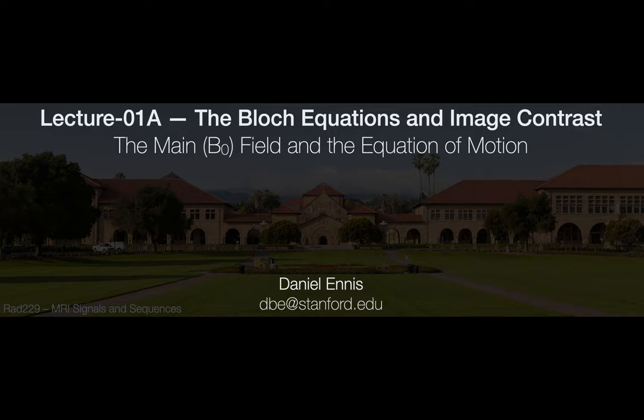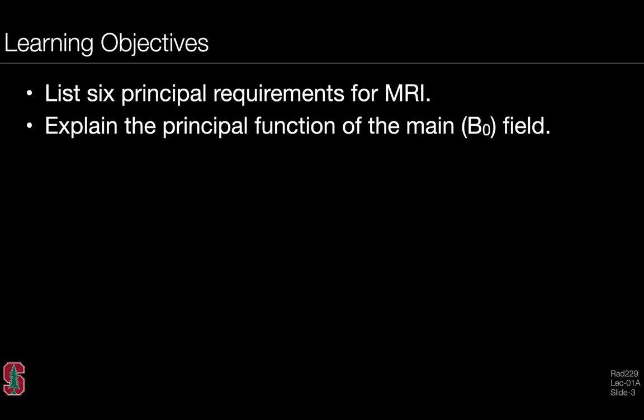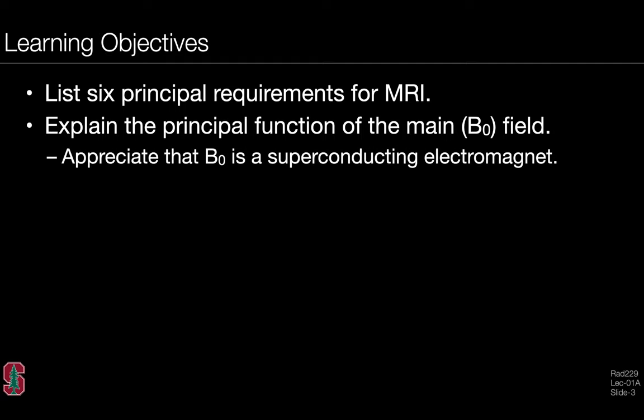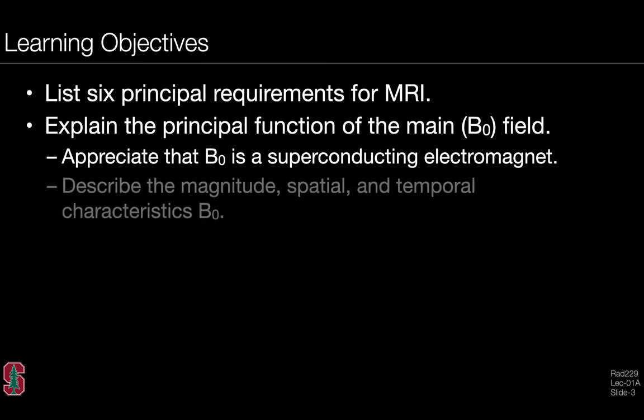Lecture 1a covers the main B0 field and the equation of motion. The learning objectives include being able to list six principal requirements for MRI, explain the principal function of the main B0 field, appreciate that B0 is a superconducting electromagnet, and describe the magnitude, spatial, and temporal characteristics of B0.